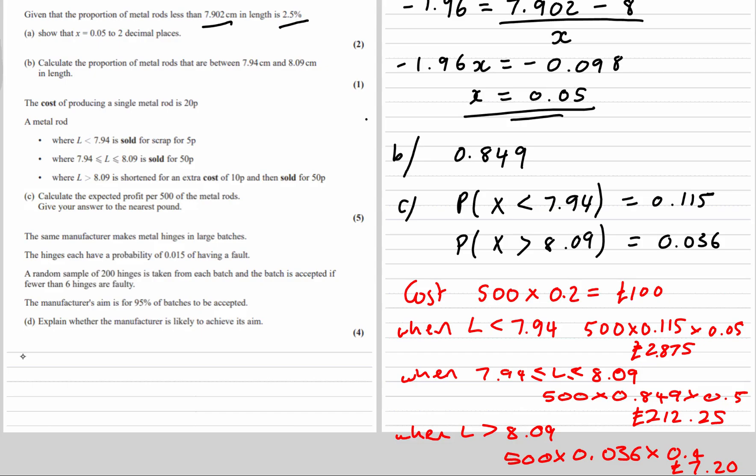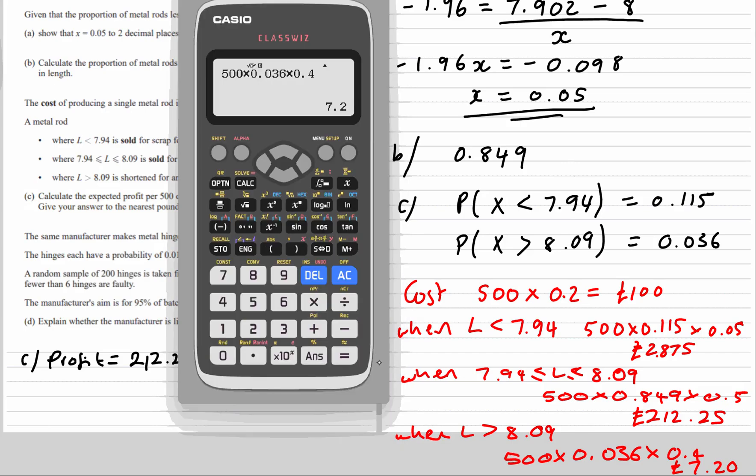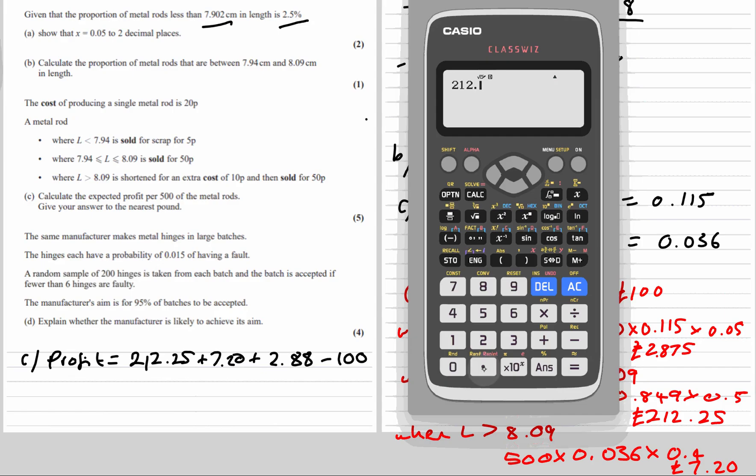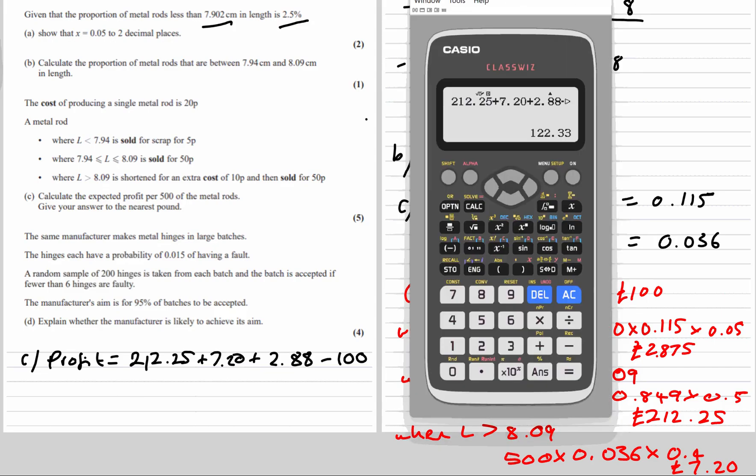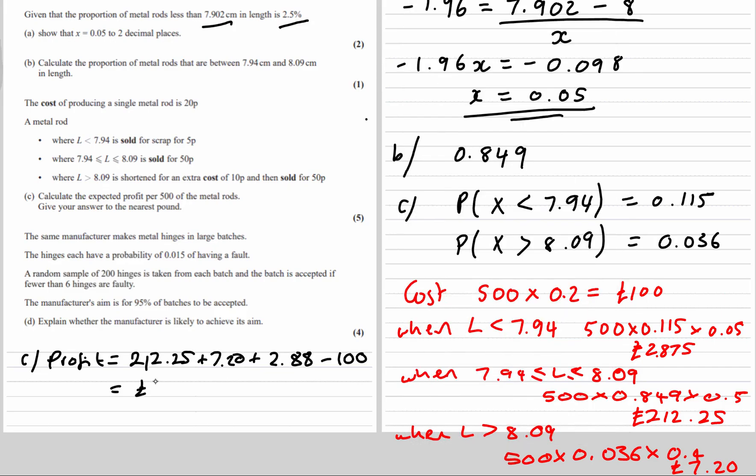So the total profit is going to be £212.25, £7.20 and £2.88, take away the £100 cost. So that is £122.33.